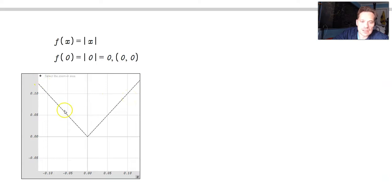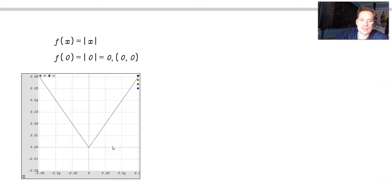Let me emphasize again, it doesn't matter how closely you zoom in. I've zoomed in again. You're going to go 0.04 down, 0.04 over, so the ratio is negative 1. 0.04 to the right, 0.04 up, so the ratio is positive 1.